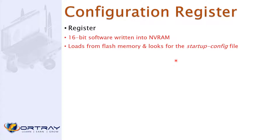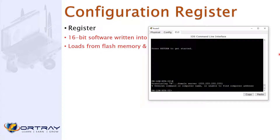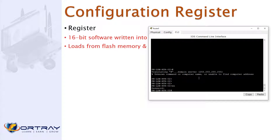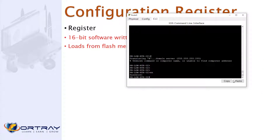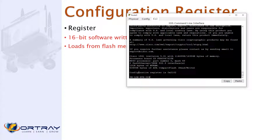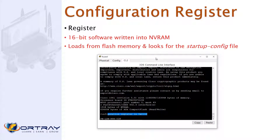Using 'show version' on the router, you can see the configuration register value — it shows 0x2102. This is a 16-bit value written into NVRAM and loaded from flash memory. By default, the configuration register is 0x2102, which instructs the router to load from flash memory and look for the startup configuration.